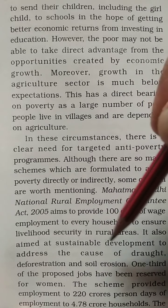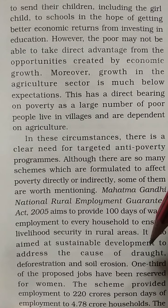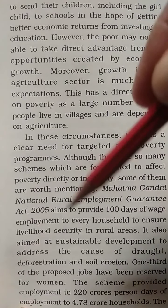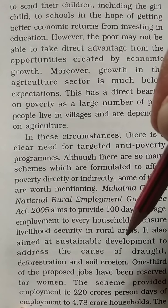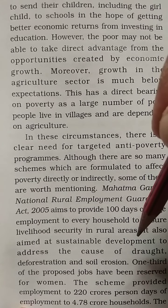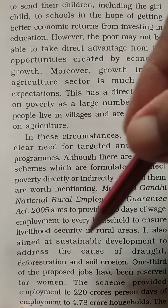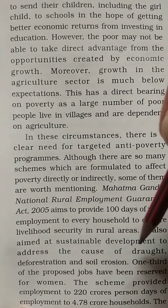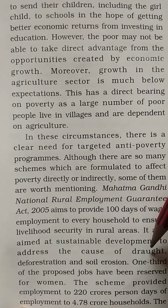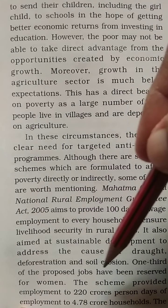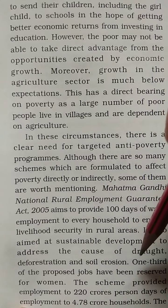The scheme also aims at sustainable development — sustainable development ka matlab hai ki hum apne resources utna hi use karein jitni zarurat hai, aur aane wali future generation ke liye bachake rakhein — to address the cause of drought, deforestation, and soil erosion. One third of the proposed jobs have been reserved for women — inmein se ek tihaai kaam mahilaon ke liye reserve hai.